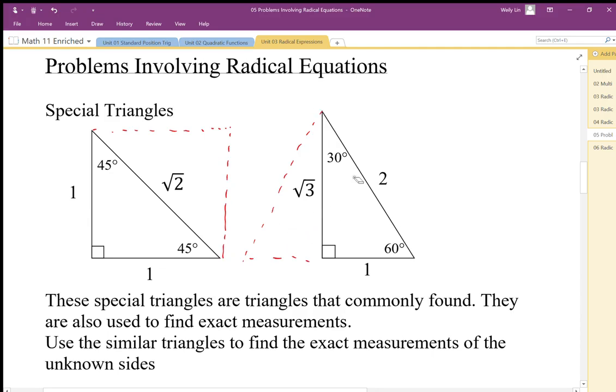If I take half this triangle, we have 2 and 1, and we can work out that third side using Pythagoras. We get our 30-60 triangle.